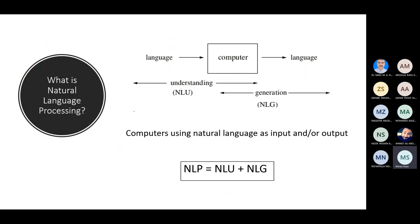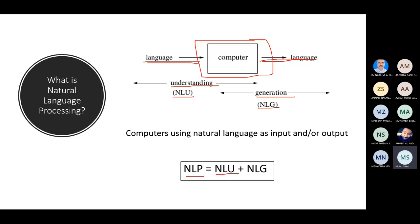In short, natural language processing means the computer takes language as input and produces language as output. The challenge is making the computer understand our language — this subtask is called natural language understanding. The other side is providing or generating the output, called natural language generation. So NLP equals natural language understanding plus natural language generation.